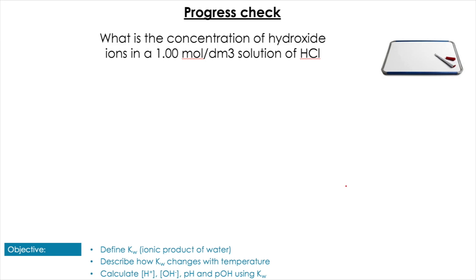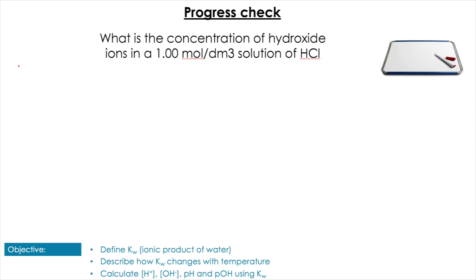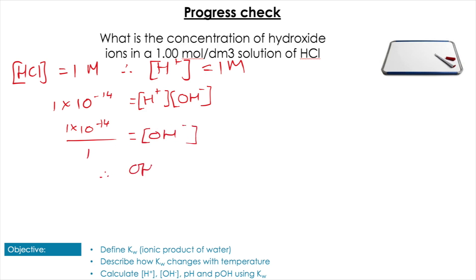Next: find the hydroxide ion concentration in a 1 mol dm⁻³ solution of HCl — pause the video. HCl is a monoprotic acid, so [H⁺] = 1 mol dm⁻³. Then 1 × 10⁻¹⁴ divided by 1 gives [OH⁻] = 1 × 10⁻¹⁴ mol dm⁻³.